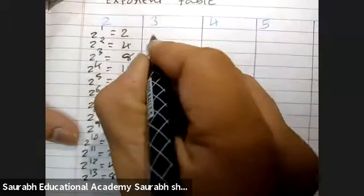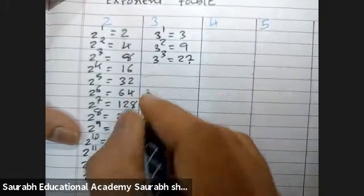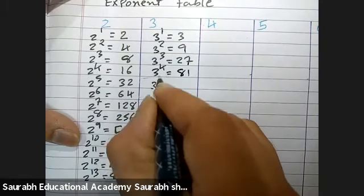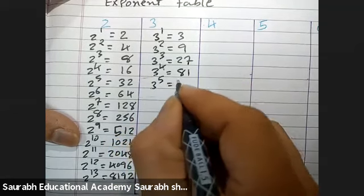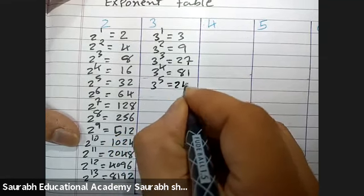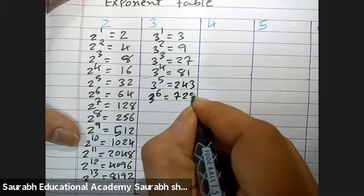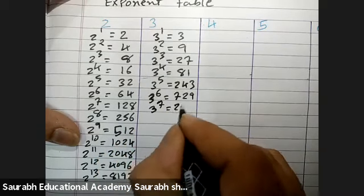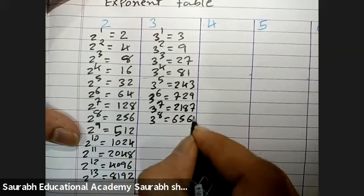Now, exponent of 3: 3 raise to 1 is 3, 3 raise to 2 is 9, 3 raise to 3 is 27, 3 raise to 4 is 81, 3 raise to 5 is 243, 3 raise to 6 is 729, 3 raise to 7 is 2187, and 3 raise to 8 is 6561.